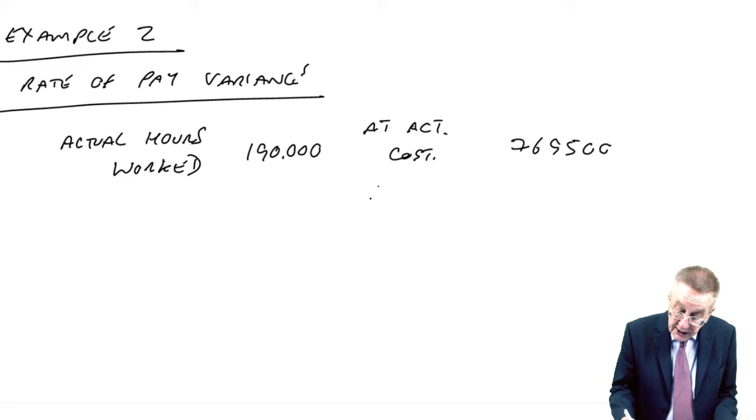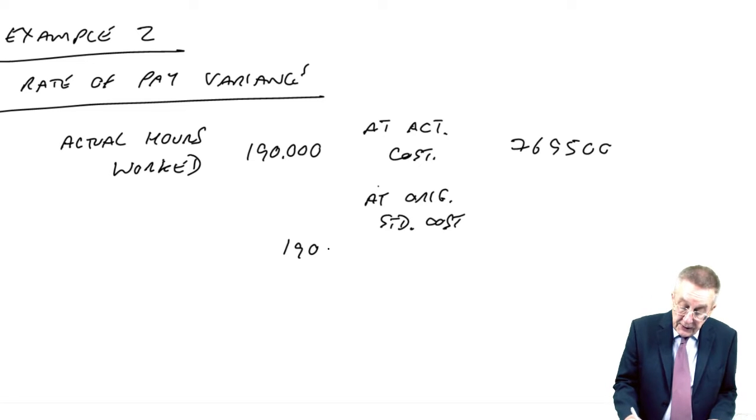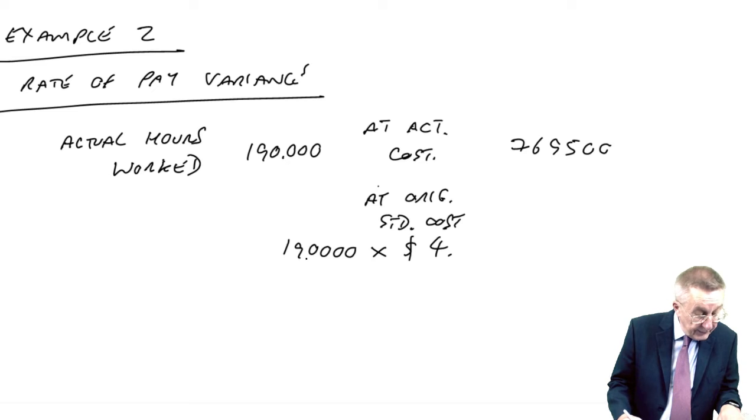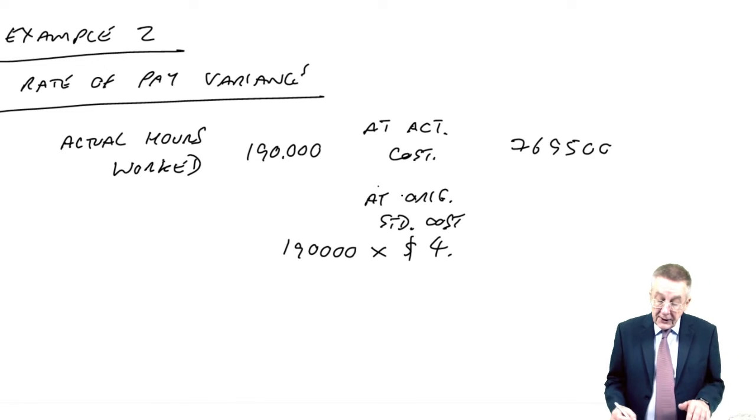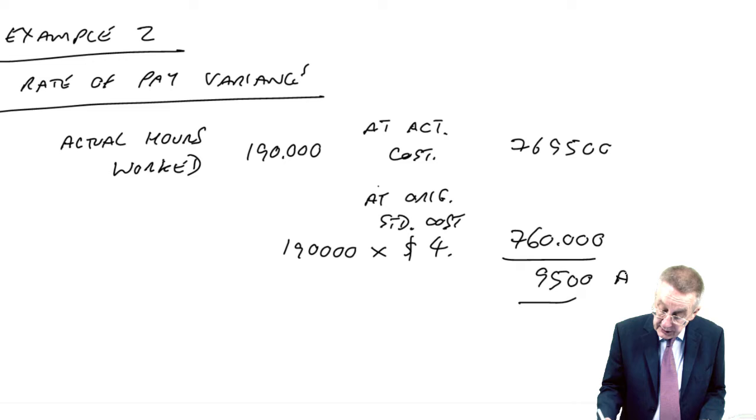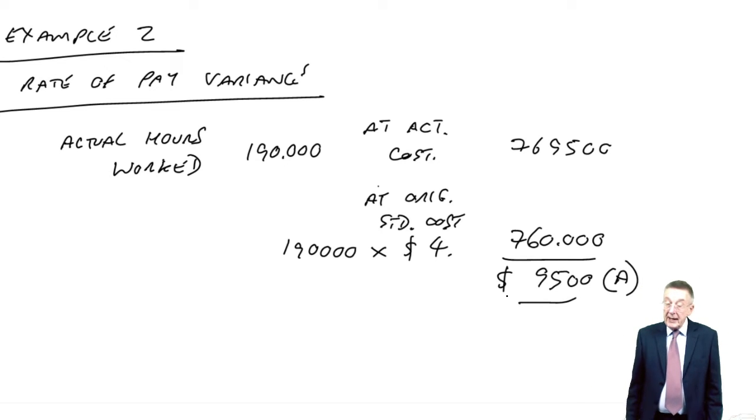Actual hours worked at standard cost, original standard cost is 190,000. It should have been $4 an hour. So it should have been $760,000. And so we've overspent by $9,500. So in total, there's an adverse rate of pay variance.